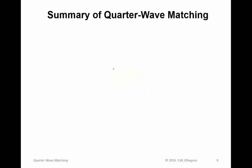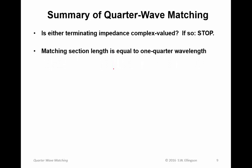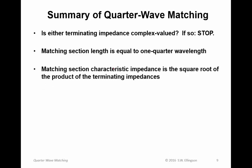Now, a summary of quarter wave matching. Here's the steps. First, is either terminating impedance complex valued? If it is, stop. Quarter wave matching by itself will not work. You can have a solution which involves a quarter wave match, but you're going to have to do something about the reactance. The matching section length is set equal to one quarter wavelength. So, you figure out what a wavelength is in the material that you're using, and you compute the length on that basis.